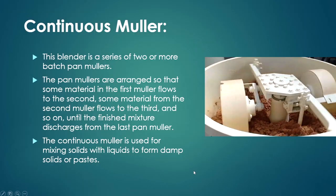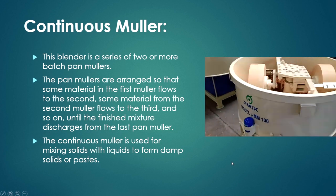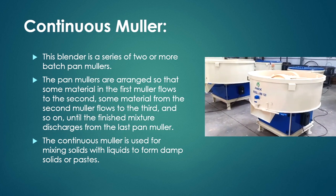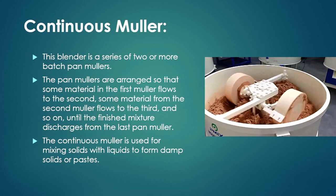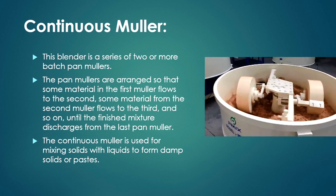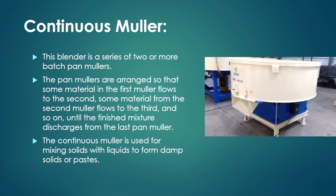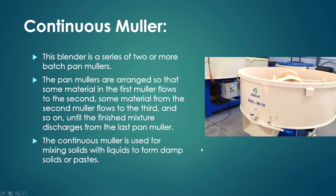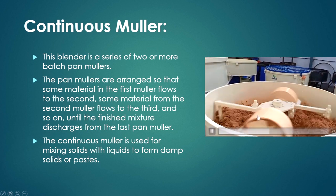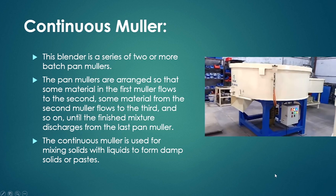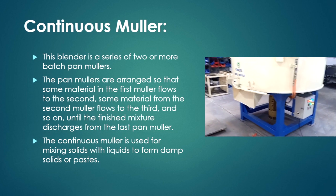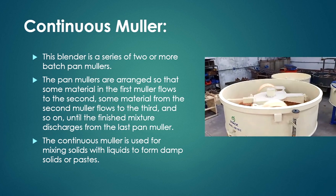The continuous Muller blender is a series of two or more batch pan Mullers arranged so that some material in the first Muller flows to the second, some from the second flows to the third, and so on until the finished mixture discharges from the last pan Muller. The continuous Muller is used for mixing solids with liquids to form damp solids or pastes, and one pan continuously transfers to the next, increasing the degree of mixing.